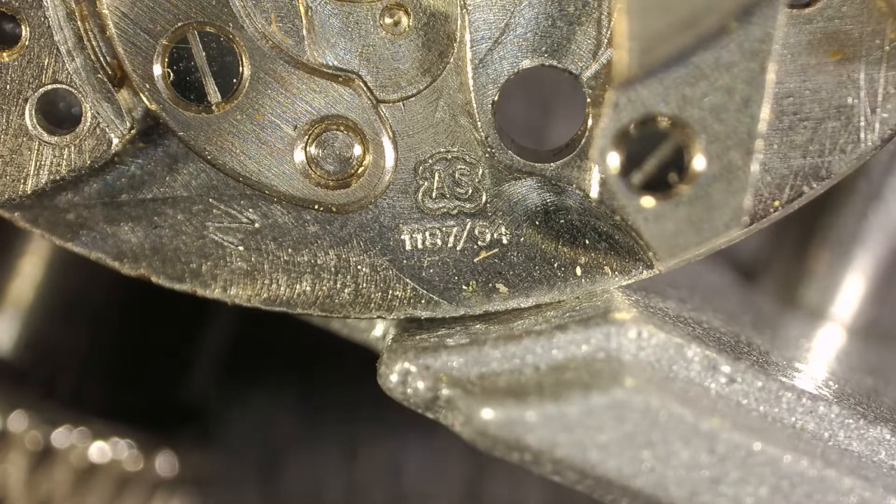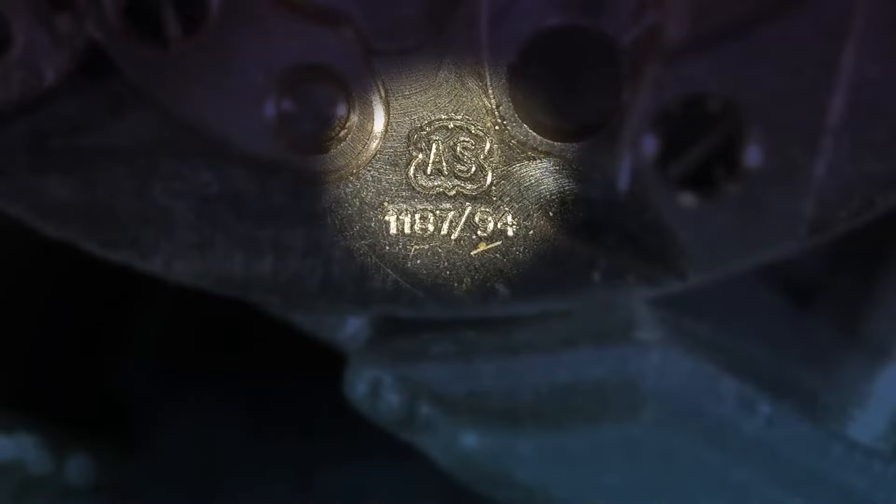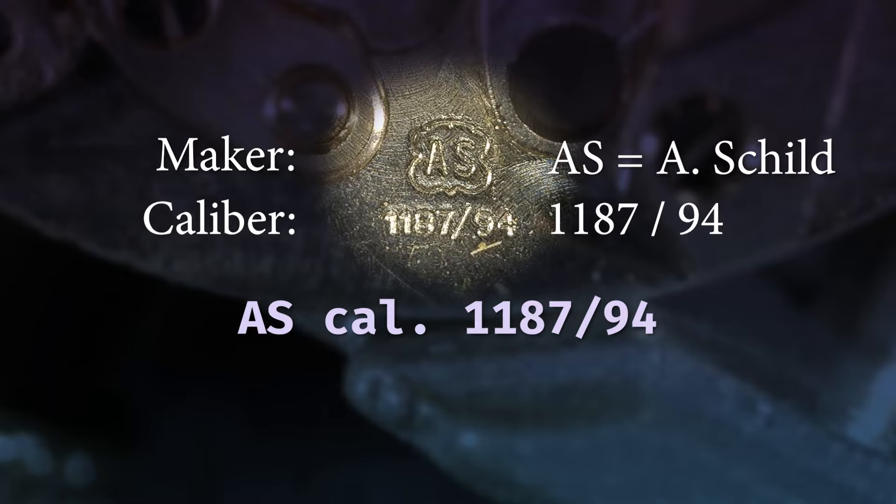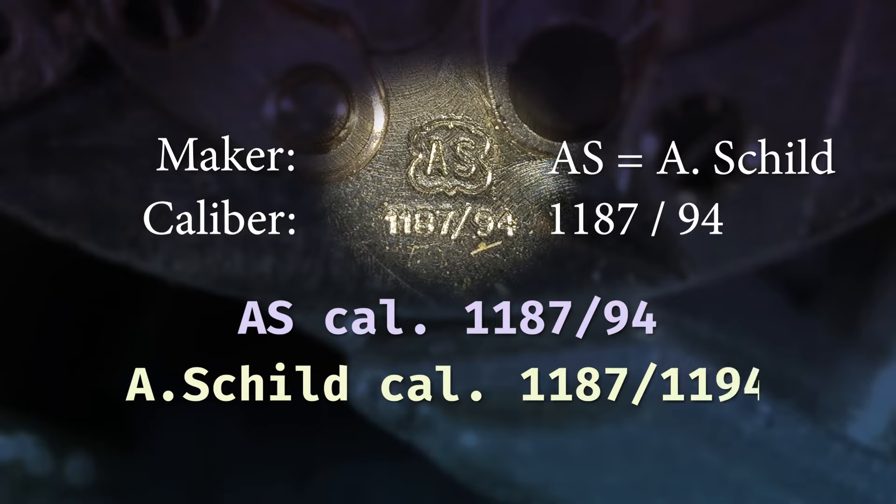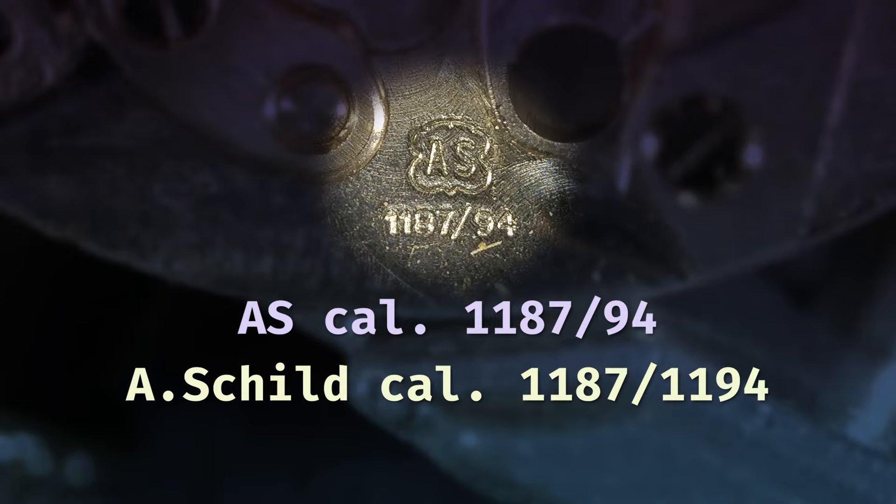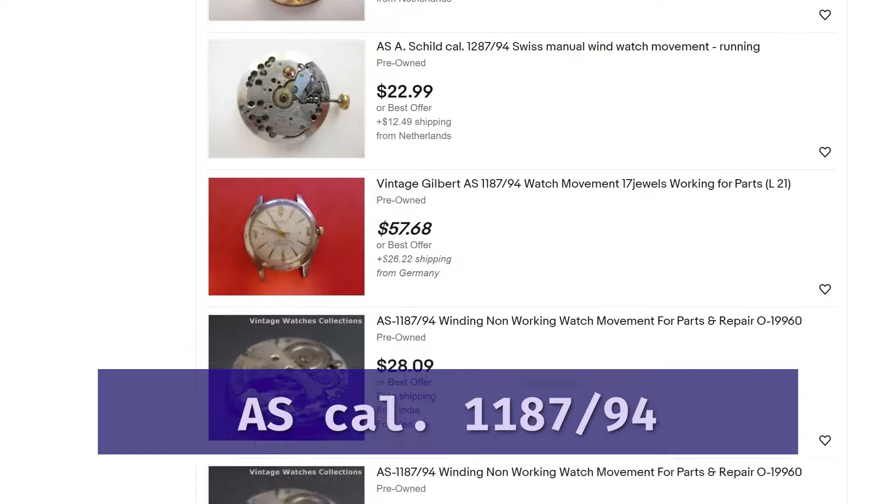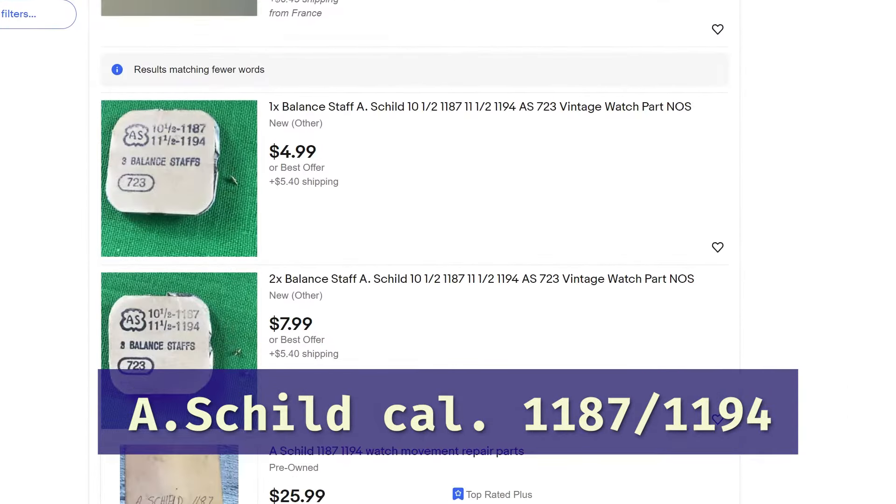With the balance gone, we can see the manufacturer and reference number of the movement. This movement says AS, which is the maker, A. Schild. The number 1187-94, also called the caliber, is the key to finding parts and support documentation for a watch. If you were searching for this movement, then you would type it like this: AS Cal 1187-94. But it can also be spelled out like this: A. Schild Cal 1187-94. Understanding the different variations is important because different searches will give you different results. I searched two different ways in eBay and got very different results, but both results were relevant.